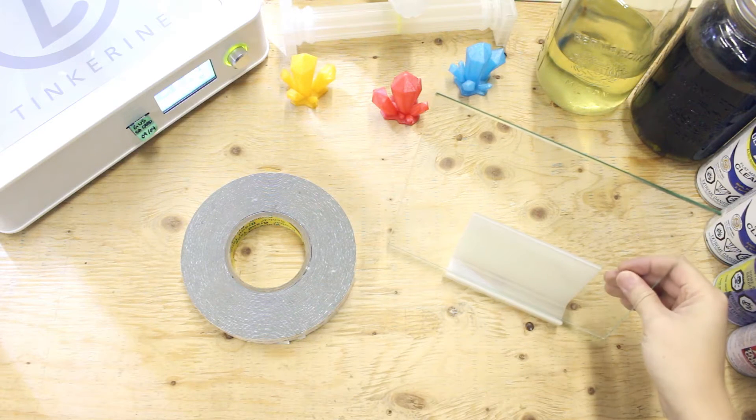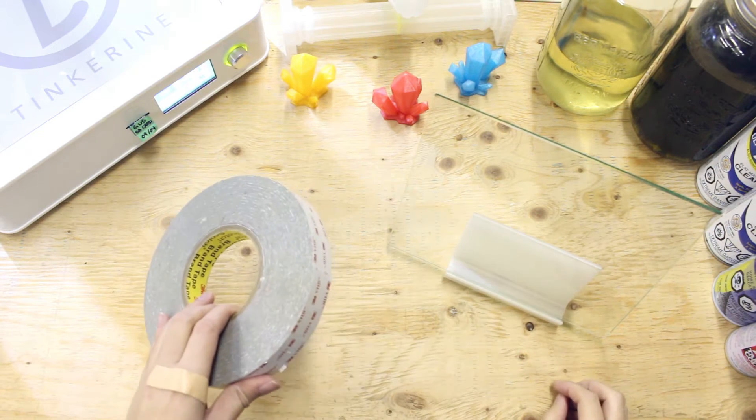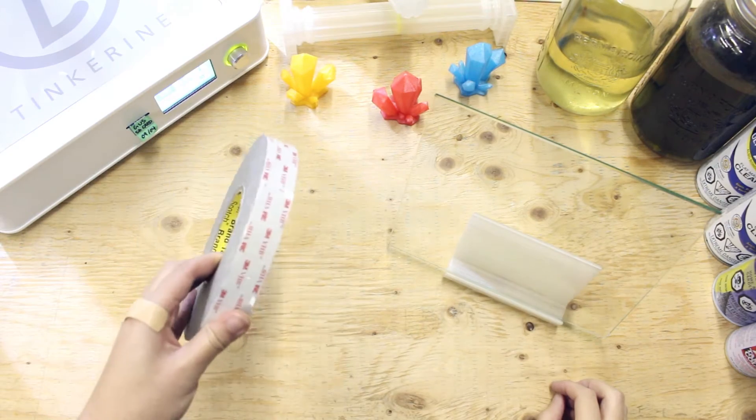Welcome to another episode of Tinkering Experiments. Today we are going to try out double sided tape as a bed adhesive.